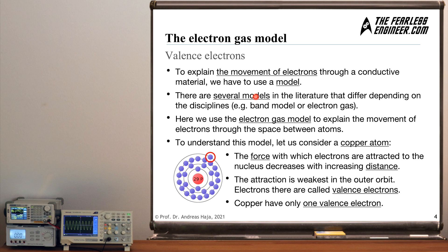So in order to explain the movement of electrons through a conductive material such as a copper cable, we have to use a model. And there are several models in the literature which might be used to explain this phenomenon, and depending on the discipline you are in, you might want to use the band model, which is very useful to understand semiconductors, or you might use this concept of electron gas. And in this video we are using this very concept here, electron gas, in order to explain the movement of electrons because this model is very intuitive, it's very easy to understand and it gives you a good image of how electrons and charge carriers propagate through conductors, how they propagate through the spaces between atoms.